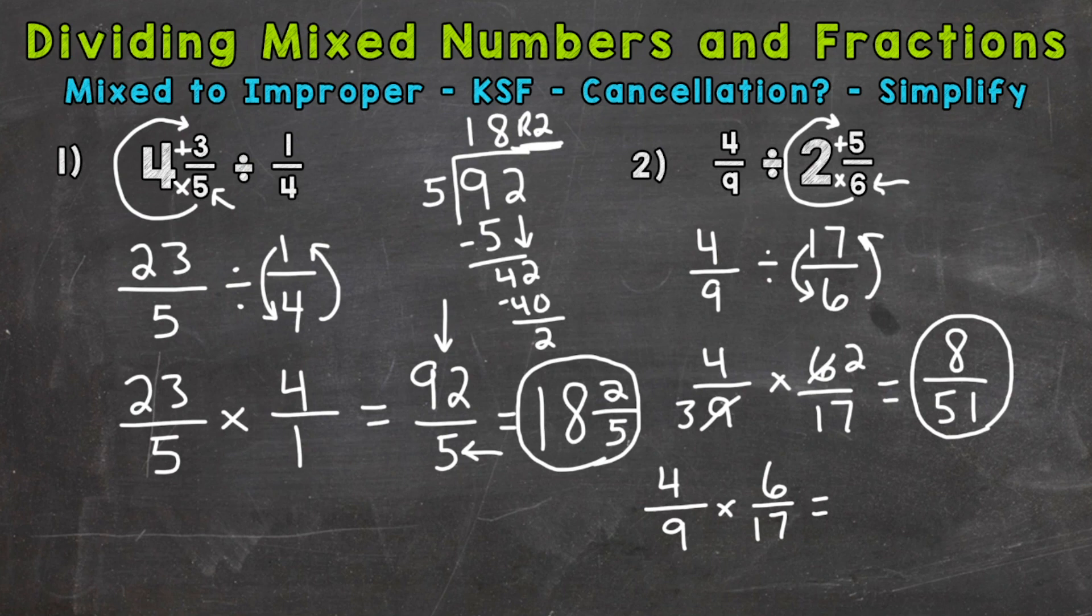We had 4-ninths times 6/17ths there. So we are ready to multiply straight across. 4 times 6 is 24. And then we would need to do 9 times 17, which I'm not sure off the top of my head, which is okay. We can come to the side and write that out.